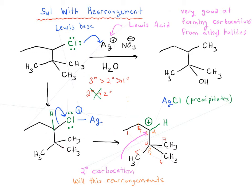On the other hand, looking at the other neighbor — carbon four — it's attached to four carbons, making it quaternary. There are no hydrogens to migrate, so we'd migrate an alkyl group instead. Doing so would give us a tertiary carbocation, which is more stable than secondary. So this alkyl shift is favorable and this rearrangement could happen.